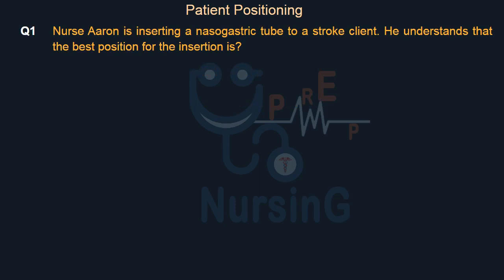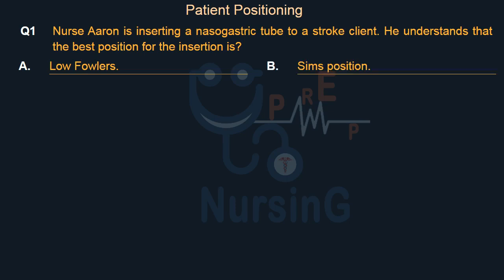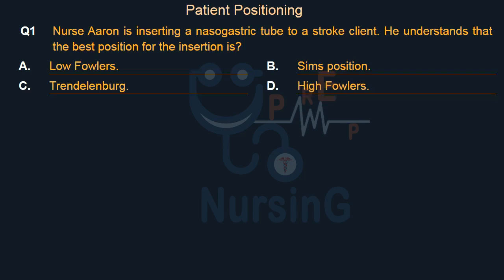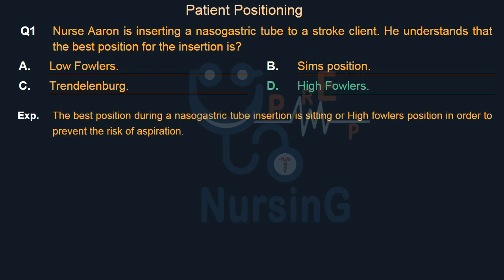He understands that the best position for the insertion is: Option A, Low Fowler's; Option B, Sims Position; Option C, Trendelenburg; Option D, High Fowler's. The right answer is Option D, High Fowler's. The best position during a nasogastric tube insertion is sitting or High Fowler's position in order to prevent the risk of aspiration.